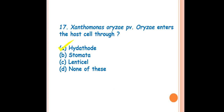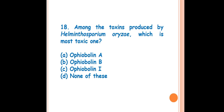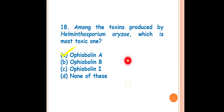Question 18: Among the toxins produced by Helminthosporium oryzae, which is the most toxic? The answer is A — Ophiobolin A. This pathogen produces three types of toxins: Ophiobolin A, Ophiobolin B, and Ophiobolin I. Among these three, Ophiobolin A is the most toxic.